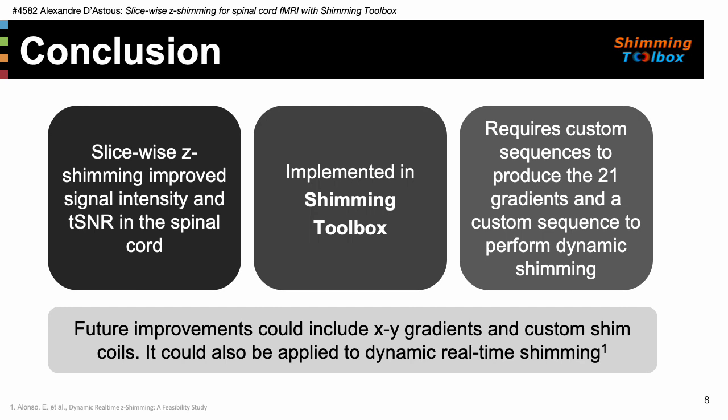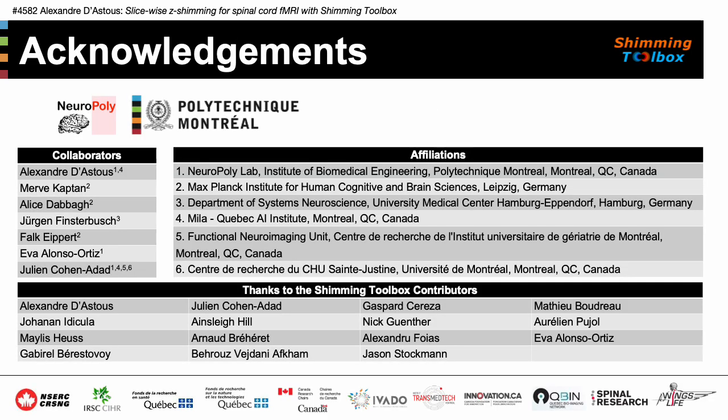To conclude, slicewise z-shimming improved signal intensity and tSNR in the spinal cord. The technique was implemented in shimming toolbox where many shimming algorithms coexist. A drawback of the intensity-based z-shimming technique is that it requires custom sequences. Future improvements could include x and y gradients as well as custom shim coils. This technique could also be applied in real time to correct for respiration-induced field variations. I'd like to thank my collaborators as well as the shimming toolbox contributors who made this possible.